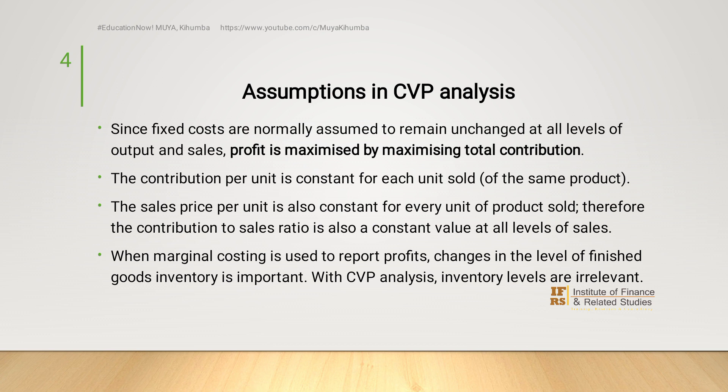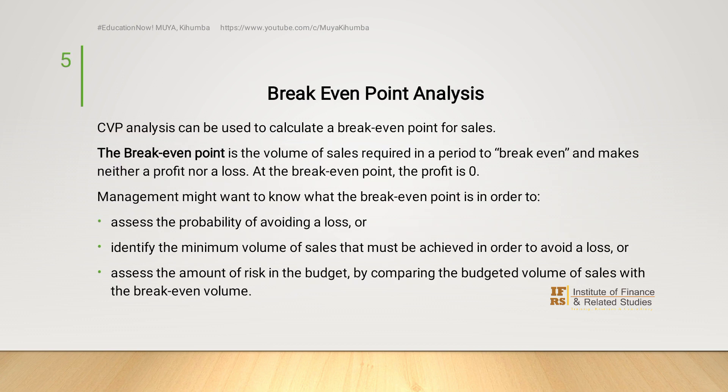When marginal costing is used to report profits, changes in the level of goods inventory are important. But with CVP analysis, inventory levels are irrelevant because we assume that they do not change. We use CVP analysis to compute the break-even point in sales. Break-even point in sales is the volume of sales required in order to break even and make neither profit nor loss — in other words, the break-even point is that point when profit is equal to zero.